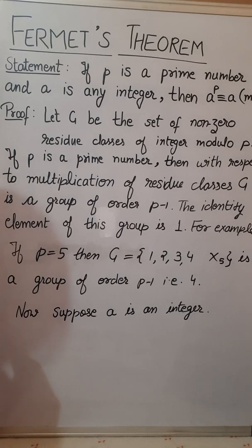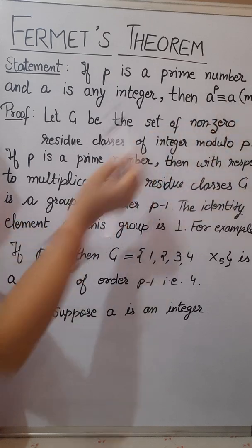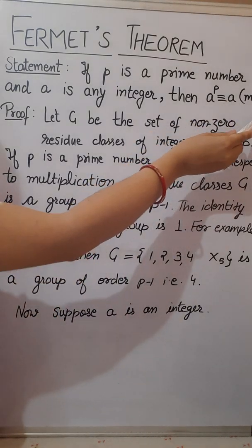It means if p is a prime number then a to the power p is always equivalent to a when we will find modulus of p.